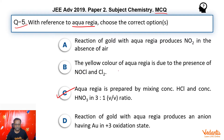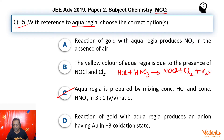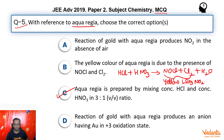Now let's come back. Option B says the yellow color of aqua regia is due to the presence of NOCl and Cl₂. When we prepare aqua regia from HCl and HNO₃, we obtain NOCl along with chlorine and water. This part is already yellow in color. When it comes in contact with air it further converts to NO₂, giving it a deeper yellow-brownish color.